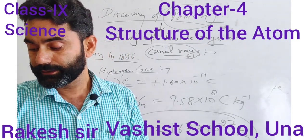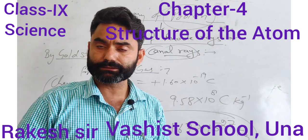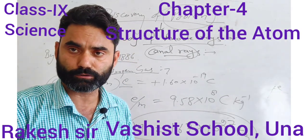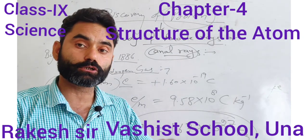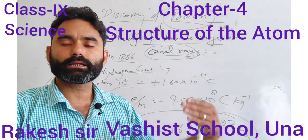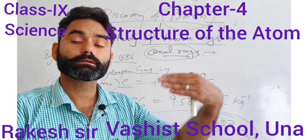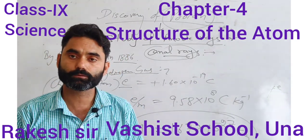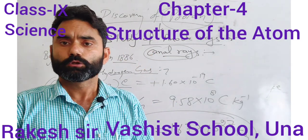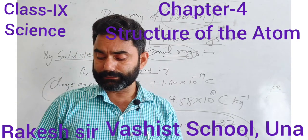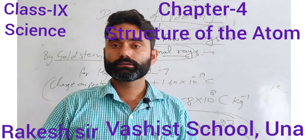After Rutherford's model, we will study the third subatomic particle — the neutron — discovered by Chadwick. The neutron is a neutral species and was studied through the study of radioactivity, a phenomenon of spontaneous emission of radiation by a particular substance. Next we will discuss Thomson's model of atom and then the discovery of neutron.